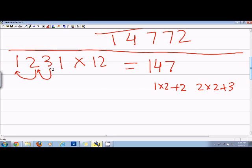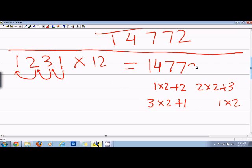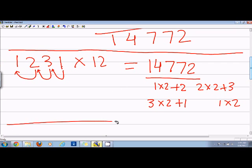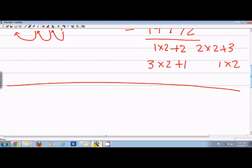So that is equal to 7, and then I will just multiply 1 by 2, so 1 into 2 is 2. So the answer is 1, 4, 7, 7, 2. So let's take another example. If I have to multiply 1212 and we have to multiply it by 12.